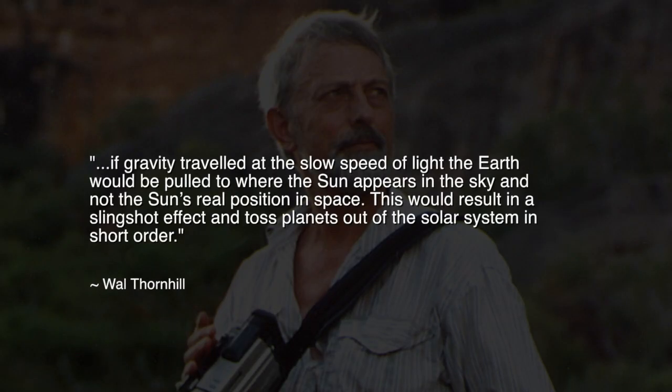Physicist Wal Thornhill describes how this can be observed in our own celestial neighborhood. He writes, if gravity traveled at the slow speed of light, the Earth would be pulled to where the Sun appears in the sky and not the Sun's real position in space. This would result in a slingshot effect and toss planets out of the solar system in short order.